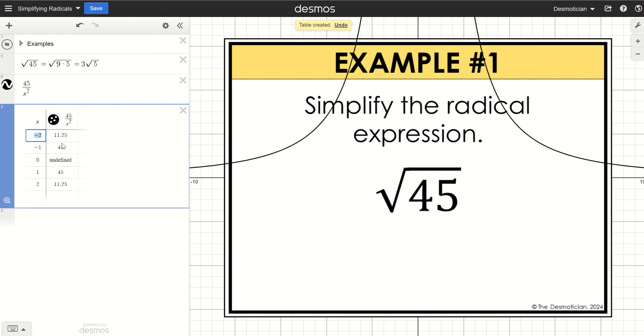Now we're only looking for integers. So when I'm looking at this right column here 11 and 25 hundredths, I'm going to just hit backspace and delete that one. Negative 1 is not going to work for us. 0 is not going to work for us.